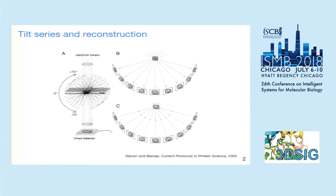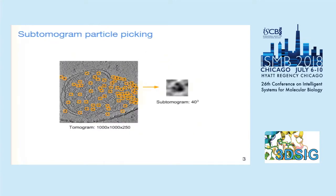Cryo-electron tomography is a revolutionary technique for imaging the native 3D structure of a single cell. Basically, a sample is frozen so quickly that no crystal is formed. Electron beams are passed through the sample to get a 2D projection image, and projection images are taken through a tilt series by rotating the sample. The 3D image of the sample can be reconstructed from the series of 2D projection images.